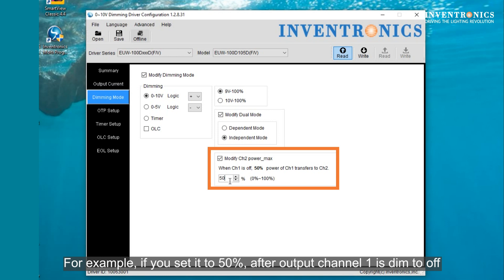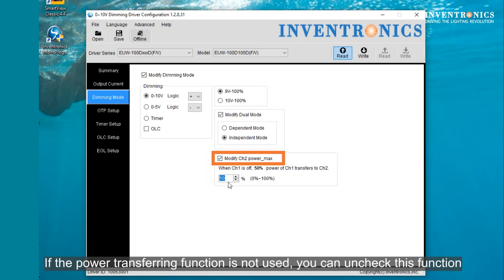For example, if you set this value to 50%, after output channel 1 is dimmed to off, 50% of the power of channel 1 will be transferred to channel 2. If the power transfer function is not used, you can uncheck this function.